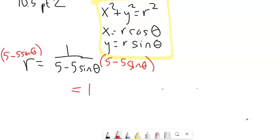And on the right-hand side, I'm just left with a 1. On the left-hand side, I can distribute that r into there. So I have 5r minus 5r sine theta. Let's take care of what we know right now. We know that we know r sine theta. We know that this is a y.